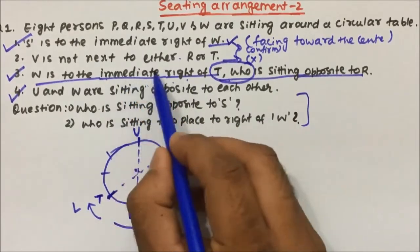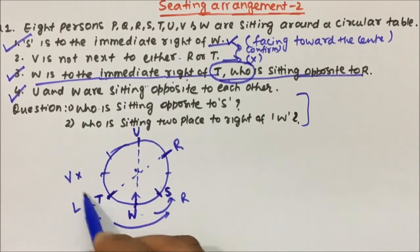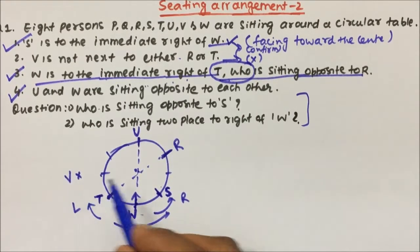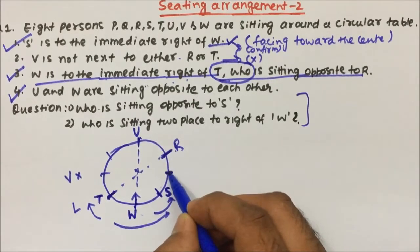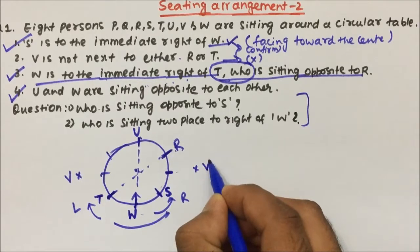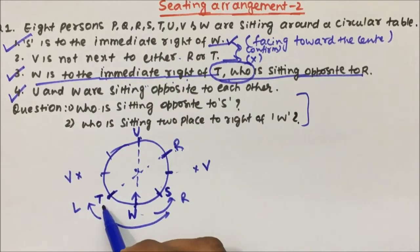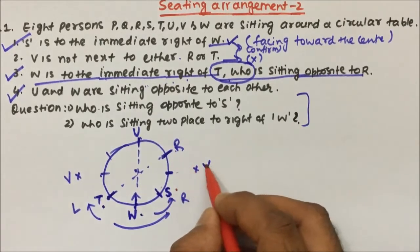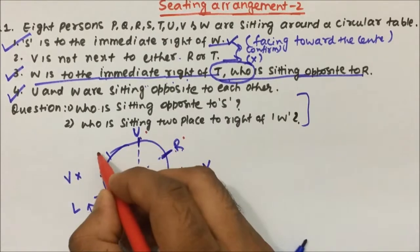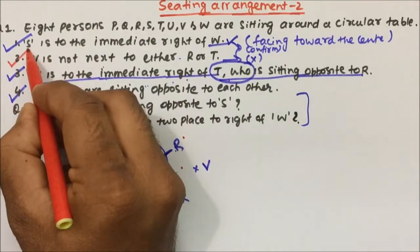Now applying V is not next to either R or T. T's next positions are W (already occupied) and one other spot. R's next positions include where U is already placed and one other adjacent spot. V cannot sit next to T or R. Going through each remaining position: several are already occupied by placed persons. V can only sit in one remaining valid position, so V is placed there.